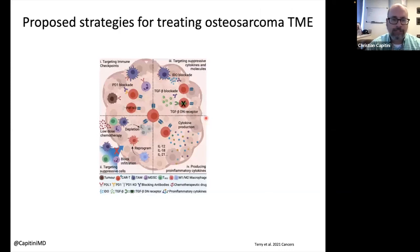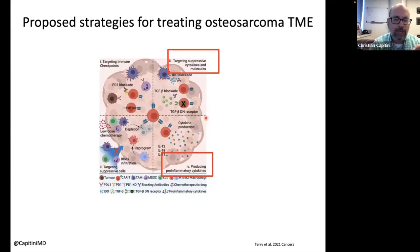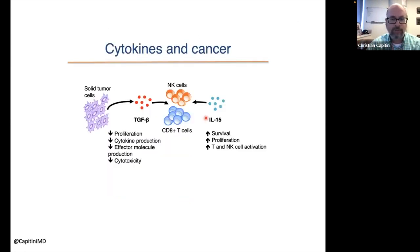A third strategy is targeting immunosuppressive cytokines and molecules floating in the environment around the osteosarcoma, and on the flip side, can we increase the pro-inflammatory cytokines? So let's block the negative ones, and is there a way to increase the positive ones?